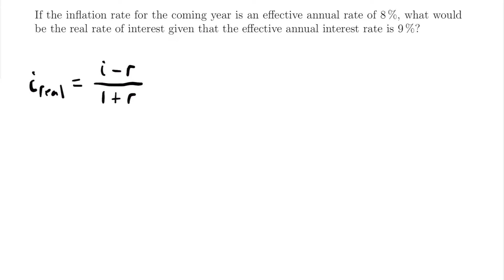In this case, let's identify our interest rate and our inflation rate. We're told that the inflation rate for the coming year is an effective annual rate of 8%, so R is equal to 0.08 — that is 8% in decimal form. And we're told that the effective annual interest rate is 9%, so I is equal to 0.09 — that is 9% in decimal form.